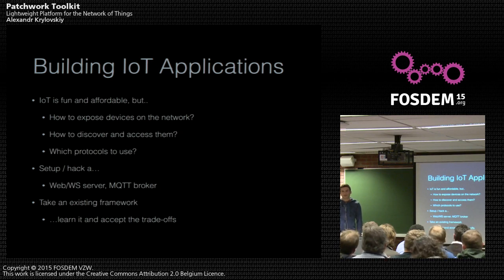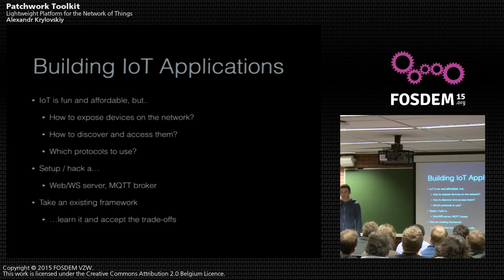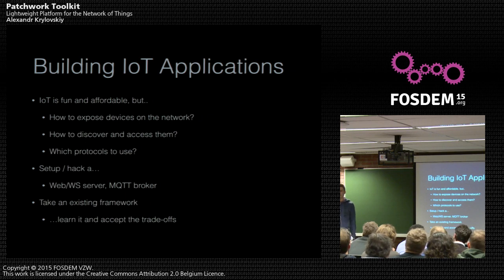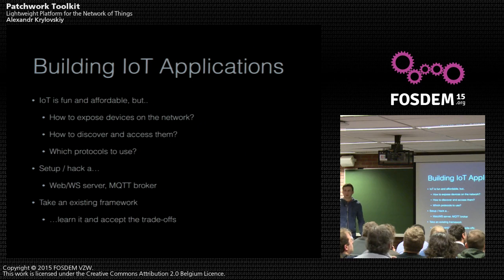The problem is that all of these frameworks, including Patchwork, have their own way of doing things. They provide their own APIs that you need to learn. And then you need to accept the tradeoffs. If you don't mind running a JVM with a dozen OSGI bundles on your Raspberry Pi, then you're probably fine — but you need to get to that point and accept this.